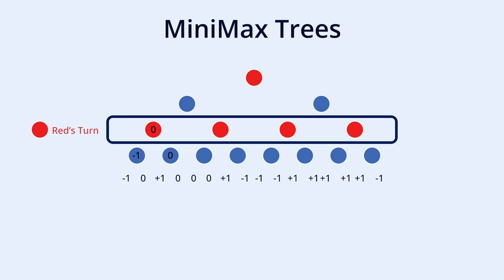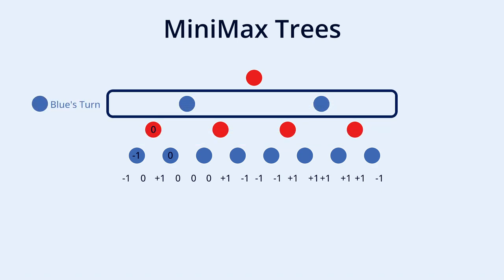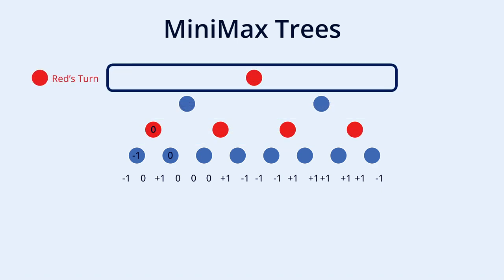We use these steps to fill in the rest of the tree. Blue picks the minimum value, Red picks the maximum value. Blue min, Red max, min, max, min, max. Well, you get where the name minimax tree comes from. Doing this, we can now see what choice we have to make. We can pick between one where we tie or one where we will win. So of course, we choose the option which gives us the maximum score.